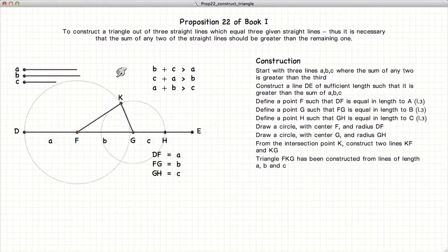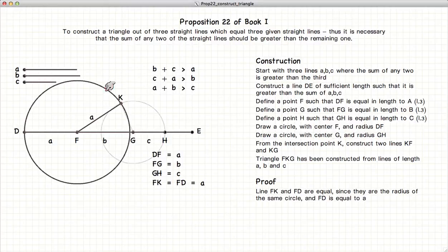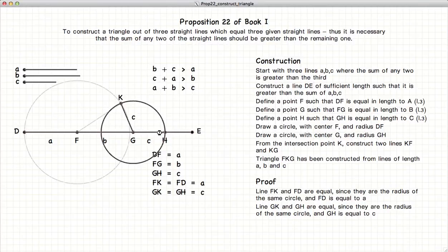So how do we prove that we've actually done this? Well if we look at the first circle that we drew, this line is equal to that line because they are the radii of the same circle. Similarly GH is equal in length to GK because they are two radii of the same circle.